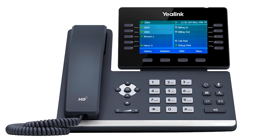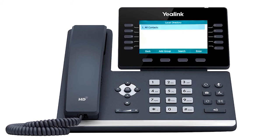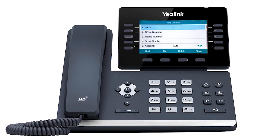To access the directory, press the directory soft key from the idle screen. Press the enter soft key on all contacts. You will see the entries listed in your directory. You can select an entry and press the send button to dial out to the contact. You can also press the add button to add additional contacts directly to the list.